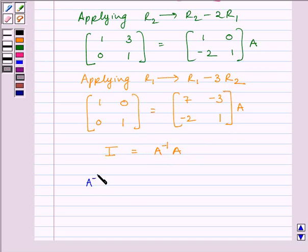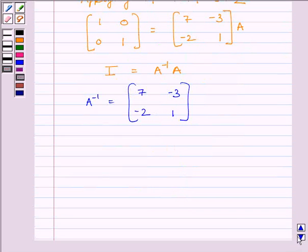So, we get A inverse is equal to matrix [7, -3; -2, 1]. So, the required inverse of the given matrix is matrix [7, -3; -2, 1].